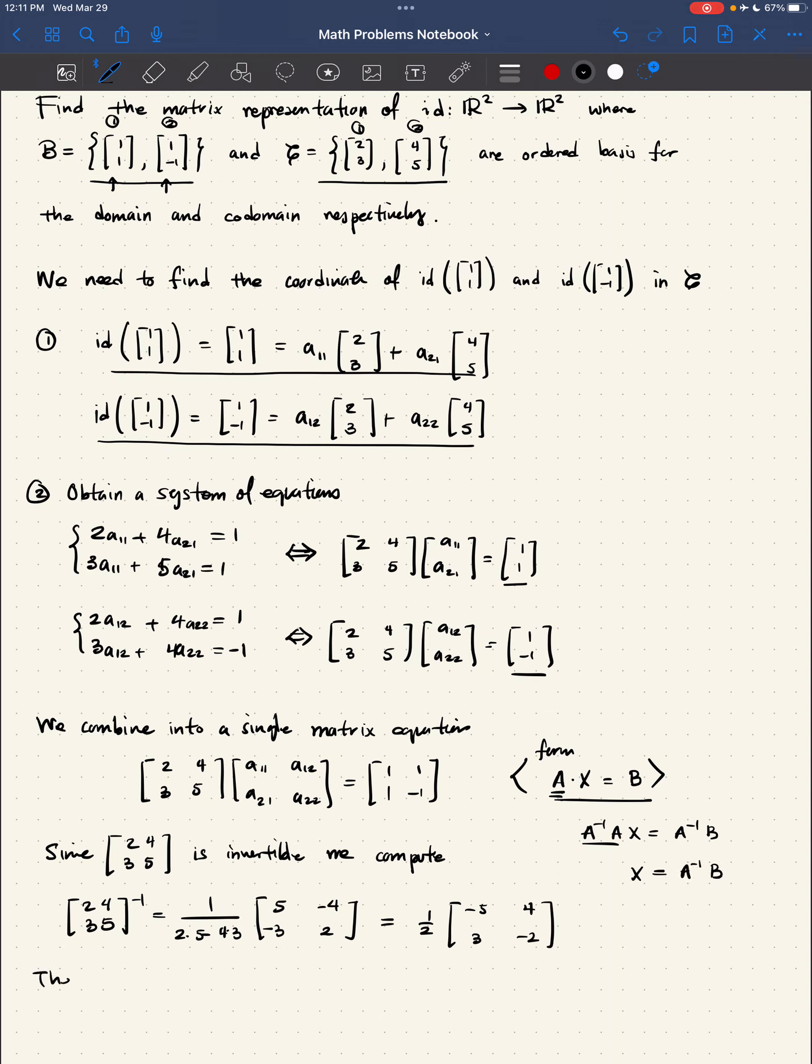Then [a₁₁, a₁₂; a₂₁, a₂₂] is equal to 1/2 of [-5,4; 3,-2] times [1,1; 1,-1].